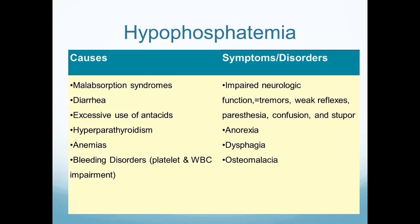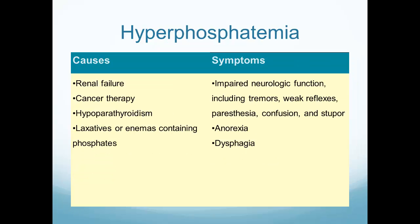There could be some impaired neurologic function from a low phosphate level, but the primary concern is that there's not enough phosphate available to make ATP. Hyperphosphatemia could occur from taking too much in, but that's very unlikely. More likely, hyperphosphatemia results from renal failure — we take phosphate in through the diet but can't excrete it. We may see impaired neurologic function, but we're really concerned about what high phosphate does to calcium: if phosphorus is high, calcium is low, and low calcium can lead to life-threatening conditions such as laryngeal spasms and seizures.